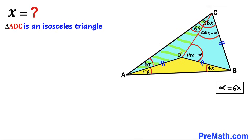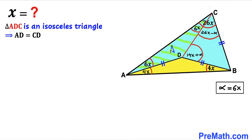Replacing alpha with 6x, let's focus on triangle ADC. Angle CAD is 6x and angle alpha (which is angle ACD) is also 6x, so triangle ADC is isosceles. Therefore side AD equals side CD.